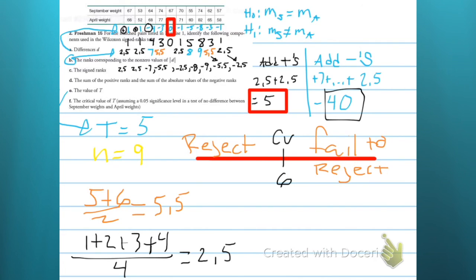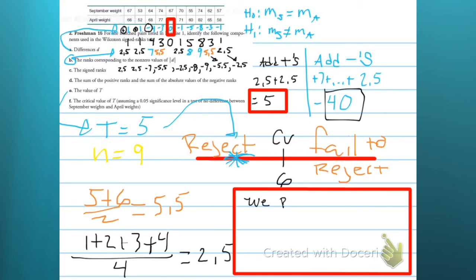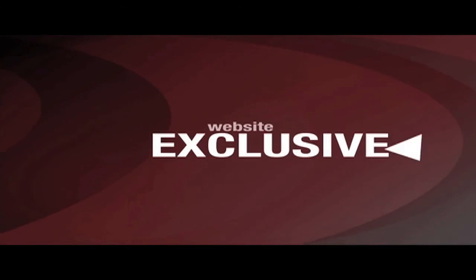So now what? We need to decide where our test stat goes. Is that to the left of 6 or to the right of 6? 5 is to the left of 6. So we reject the claim that the medians are the same. And what does that mean? Well, I suppose the freshman 15 is real. We'll see you in the next video.